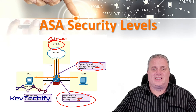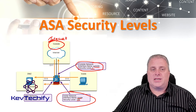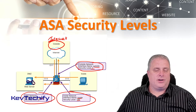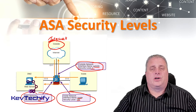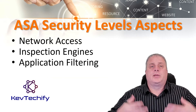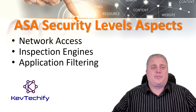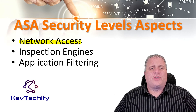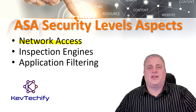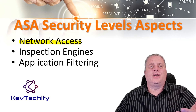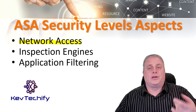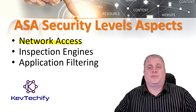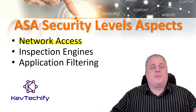DMZs and other networks can be assigned a security level between 0 and 100. Most of the time, if you have inside, outside, and a DMZ, people take that third interface, call it a DMZ, and give it a security level of 50, right in the middle of the range. Security levels help control many aspects of network traffic, including network access, inspection engines, and application filters. By default, there's an implicit permit from any higher security interface to a lower security interface, so hosts on a higher security interface can access hosts on a lower one. Multiple interfaces can be assigned the same security level, and if communication is enabled between them, there is an implicit permit for traffic between those interfaces.